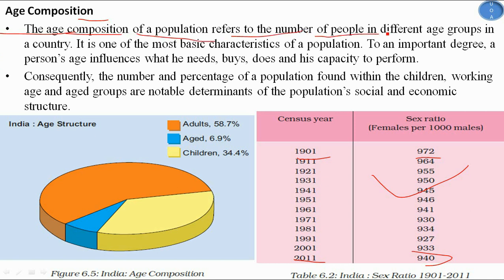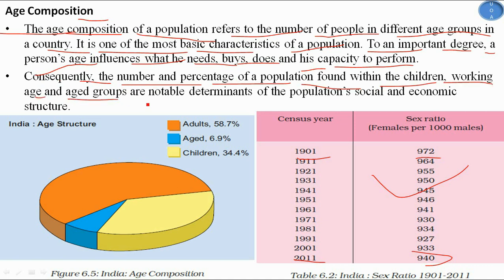Age composition refers to the number of people in different age groups in a country — one of the most basic characteristics of a population. A person's age influences what they need, buy, do, and their capacity to perform. The number and percentage in the children and working-age groups are notable determinants of social and economic structure. In India, aged and children together occupy nearly 50% of the age structure and are economically dependent, while adults contribute around 58.7% and are the productive working group.